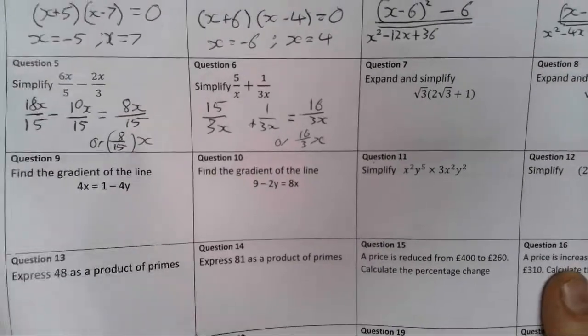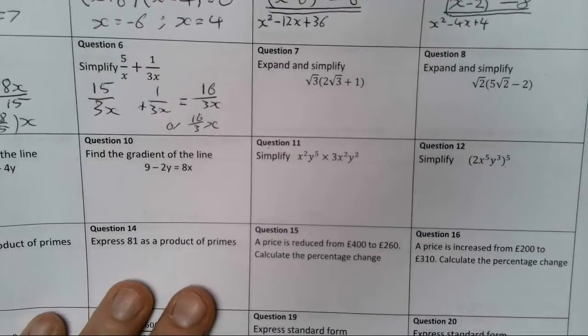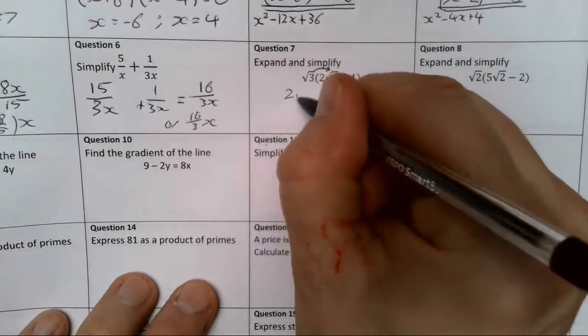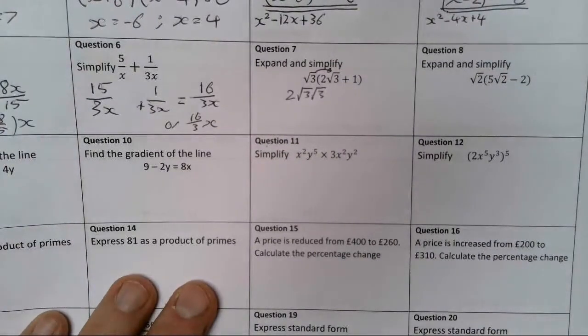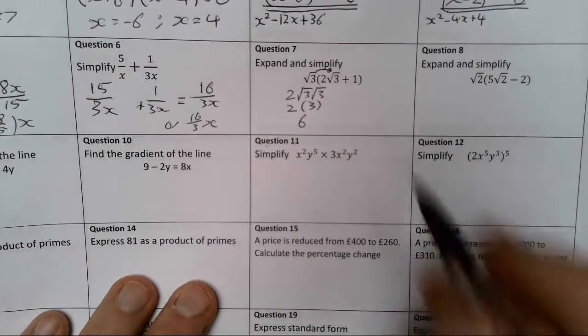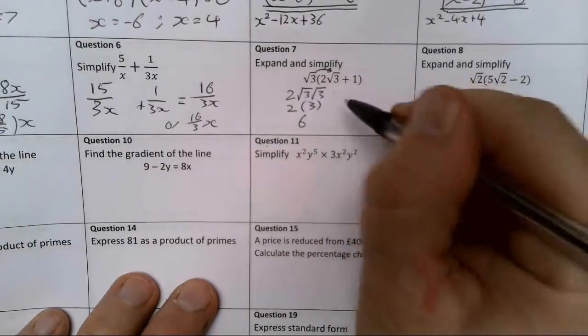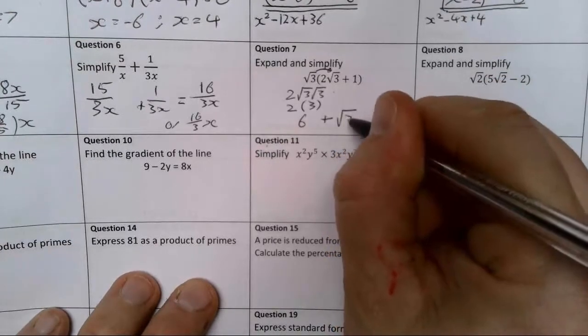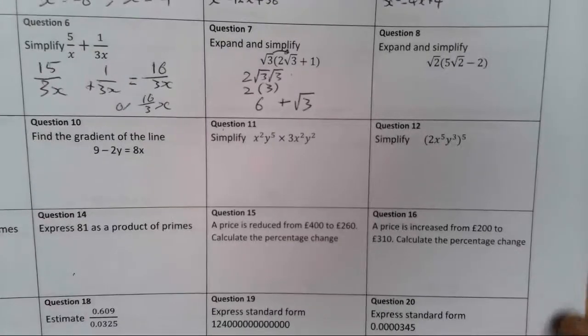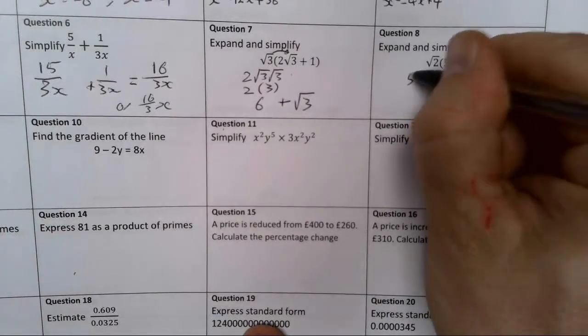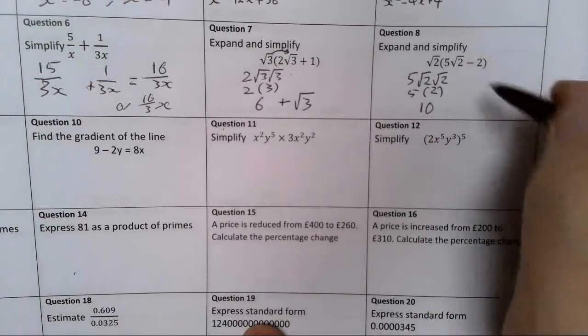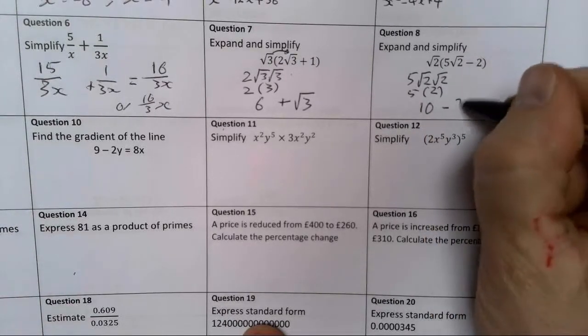Right, question 7. Just expand this out. Root 3 times by 2 root 3 gives me 2 root 3 root 3. Root 3 times root 3 just is 3, so that gives me 2 times by 3, that gives me 6. Then root 3 times 1 just gives me root 3, so 6 plus root 3 is my answer. Root 2 times by 5 root 2 gives me 5 root 2 root 2, which gives me 5 times by 2, which gives me 10. Root 2 times minus 2 gives me minus 2 lots of root 2.